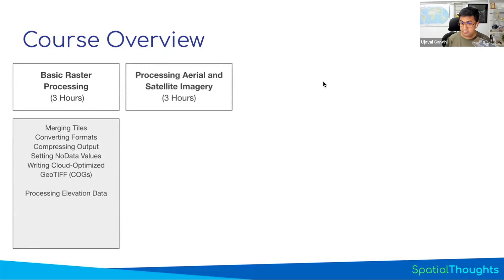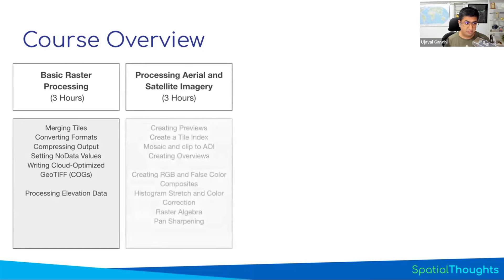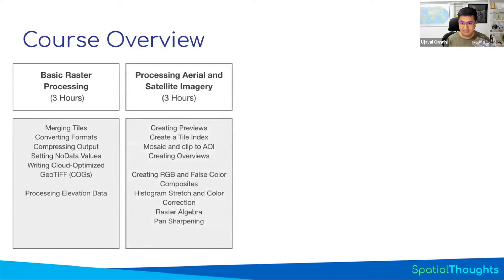Then we'll learn how to work with aerial and satellite imagery. If you have five terabytes of aerial imagery, how do you even view and process it? I'll share tricks for efficiently processing this data, finding problems, reprojecting, clipping, and so on. We'll also work with Landsat data — how to take multiple band images, stack them into different band composites, do raster algebra, compute indices like NDVI, do pan sharpening, and save data into different formats.